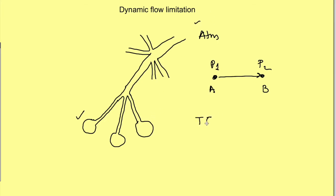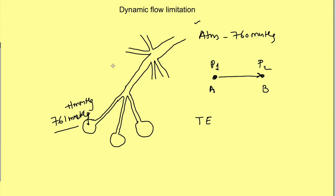In tidal expiration, alveolar pressure is plus one millimeter mercury above atmosphere. Since atmospheric pressure is 760 mmHg, alveolar pressure is 761 mmHg. As air moves from the alveoli through the various branches of the tracheobronchial tree towards the mouth, there is a continual drop in pressure — from 761 mmHg just outside the alveoli dropping progressively to 760.9, 760.8, and so on towards the mouth.